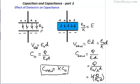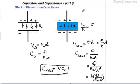So on introducing the dielectric, the electric field decreases. Since the electric field decreases, the potential difference decreases, and since the potential difference decreases, the capacitance increases. Now let's see why the electric field decreased — why did the electric field decrease on introducing a dielectric between the plates of the capacitor?